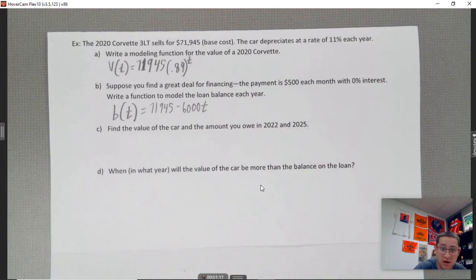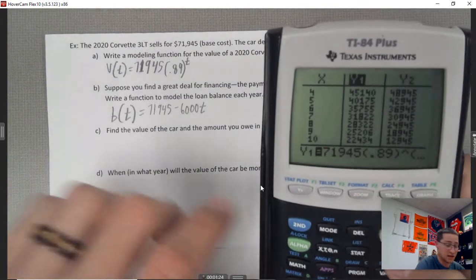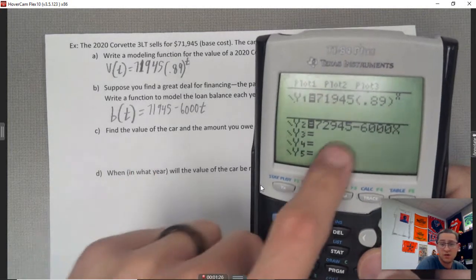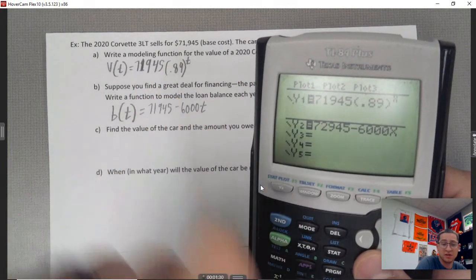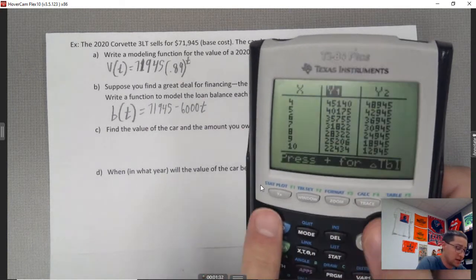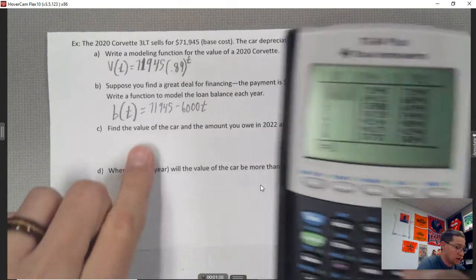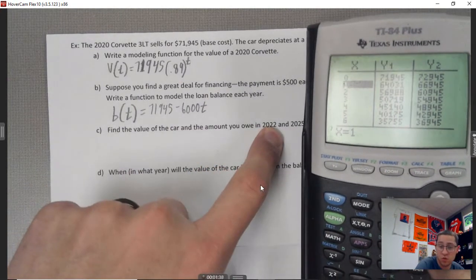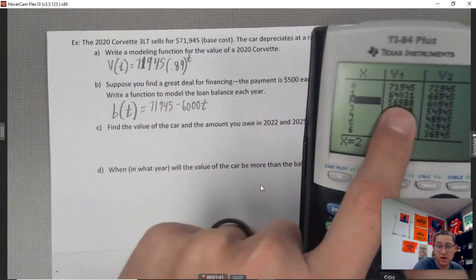And so, part c - find the value of the car and the amount you owe in 2022 and 2025. So I have these tables all nice and neat and ready to go for you. This first one is y1, my first equation; y2 is my second equation. If we're looking at the table here, that value that you owe in 2022 - that's two years after 2020. The value that you owe -